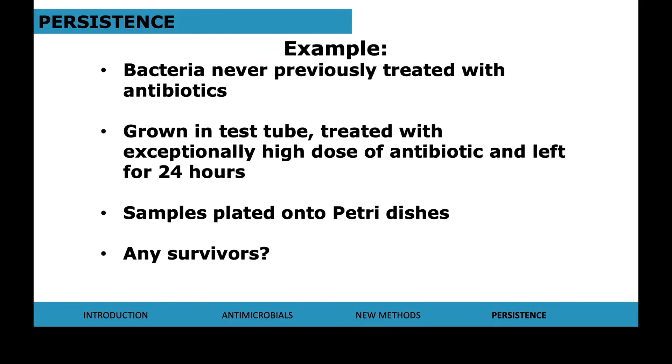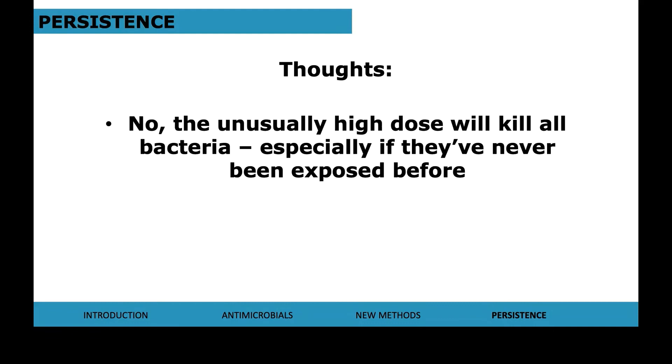So this is a fun example. You've got a species of bacteria that's never previously been treated with antibiotics. It might just be a soil-borne strain that you've acquired by just going digging somewhere. Then you grow that in a test tube. And after it's grown to a sufficient density, you treat with a really high dose of antibiotic solution and you leave it for 24 hours. You then wash away the antibiotic solution and plate that out onto petri dishes to assay for survivors. So there are two lines of thought here. Will there be any survivors? No. The unusually high dose will kill all bacteria, especially if they've never been exposed before. It's a novel dose. They're going to get attacked and they're not really going to have much time to acquire resistance.